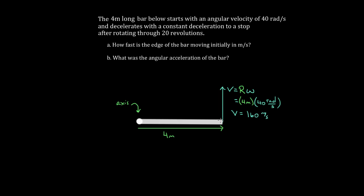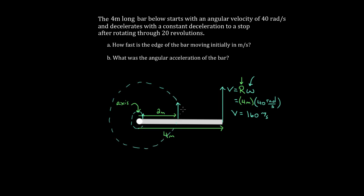If you asked for the speed at the halfway point, r would only be two meters, so the speed would be half as much. The closer in you go, the smaller r is and the smaller the speed. All points on the rod share the same angular velocity — they all rotate at the same number of radians per second — but the actual arc length they travel through is different, which makes their linear speeds different.